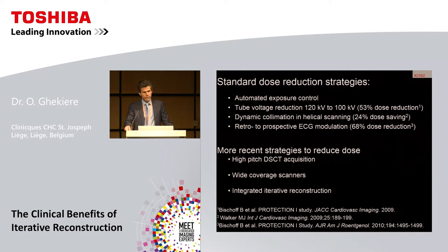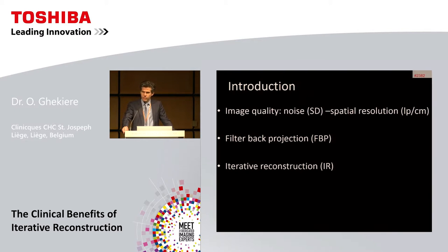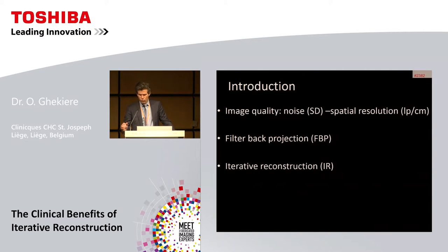More recent dose-saving strategies include high-pitched dual-source scanners, wide-coverage scanners such as the 320-slice scanner, and integrated iterative reconstruction. Image quality in CT is most often quantified as the amount of noise in the image, defined as a standard deviation, in relationship to spatial resolution defined as line pairs per centimeter. Compared to filter back projection, iterative reconstruction refers to an algorithm using mathematical and statistical modeling to reduce image noise by repeating iterative cycles.